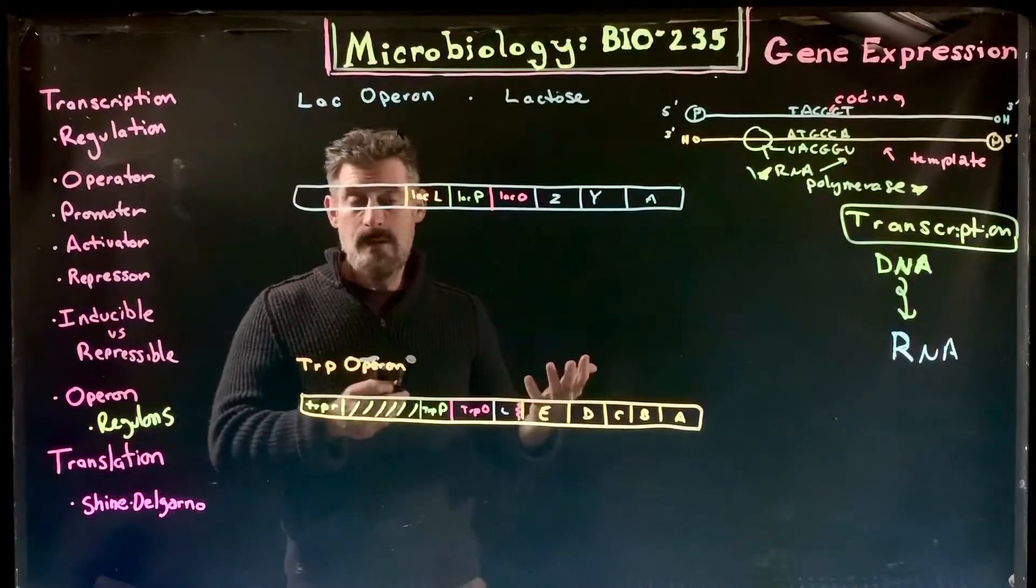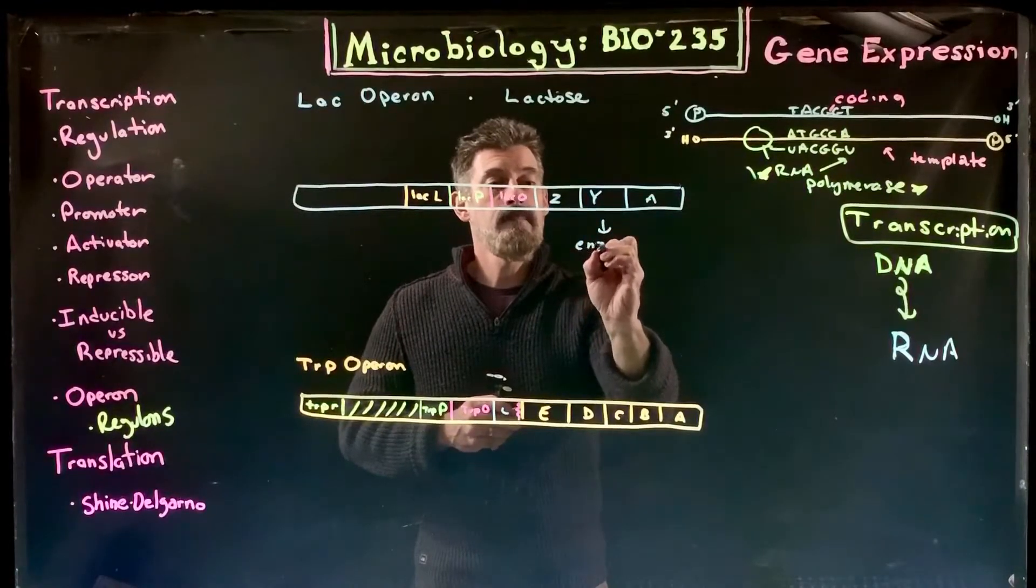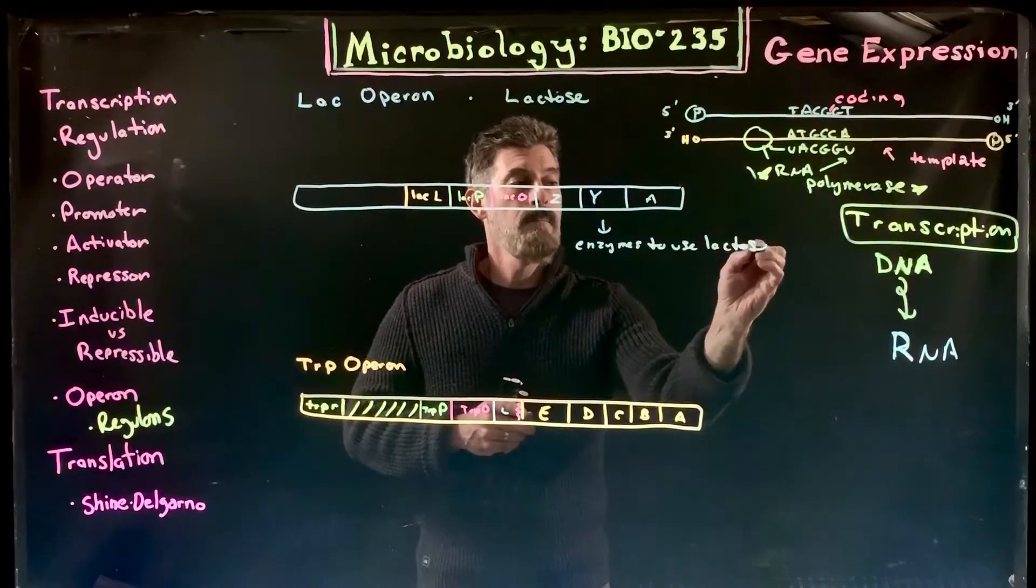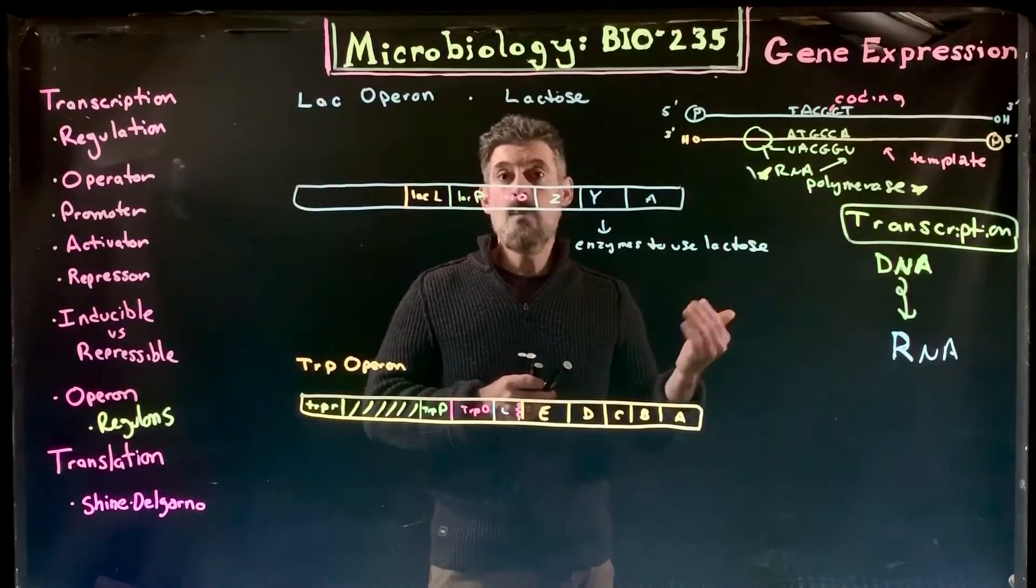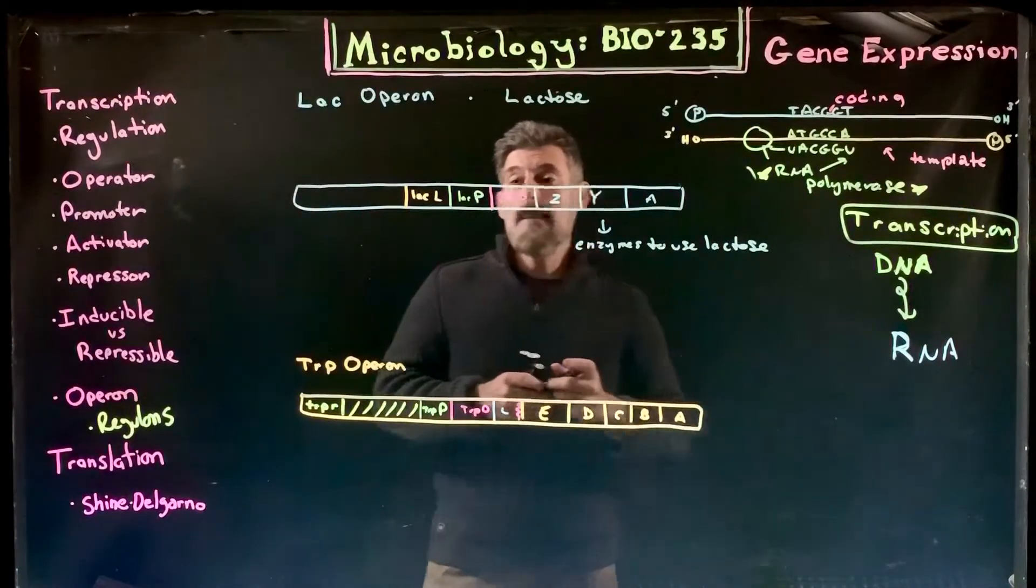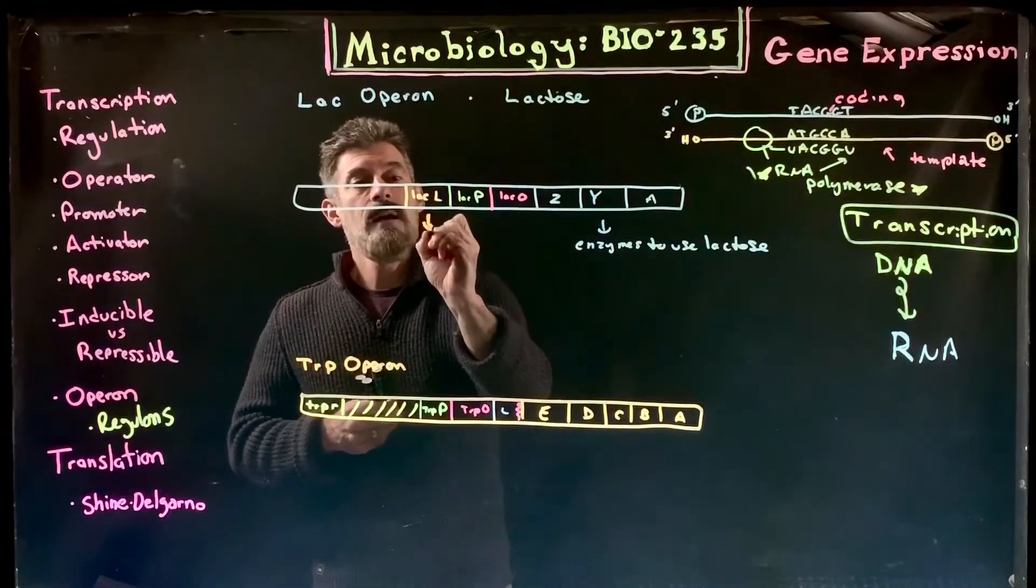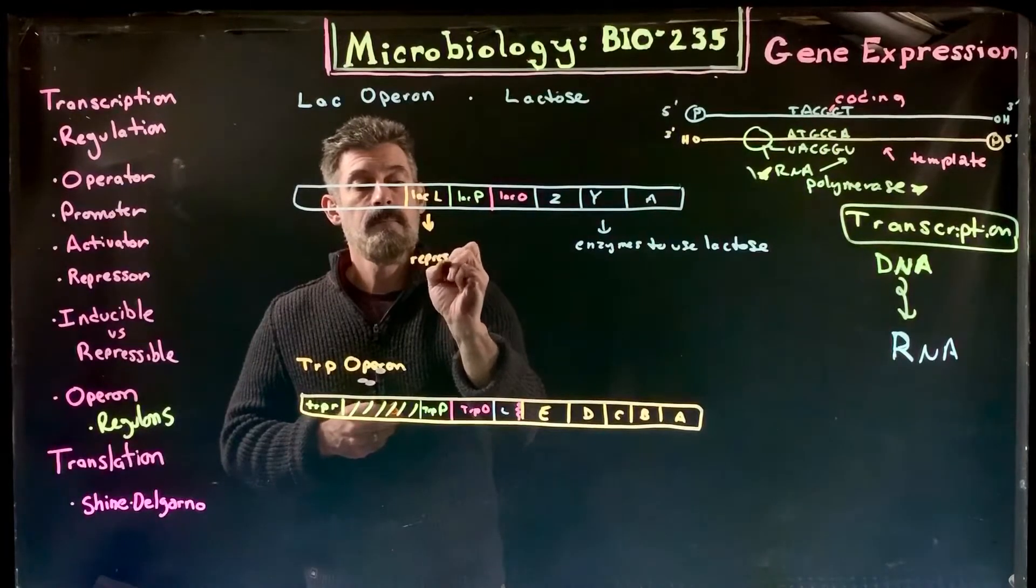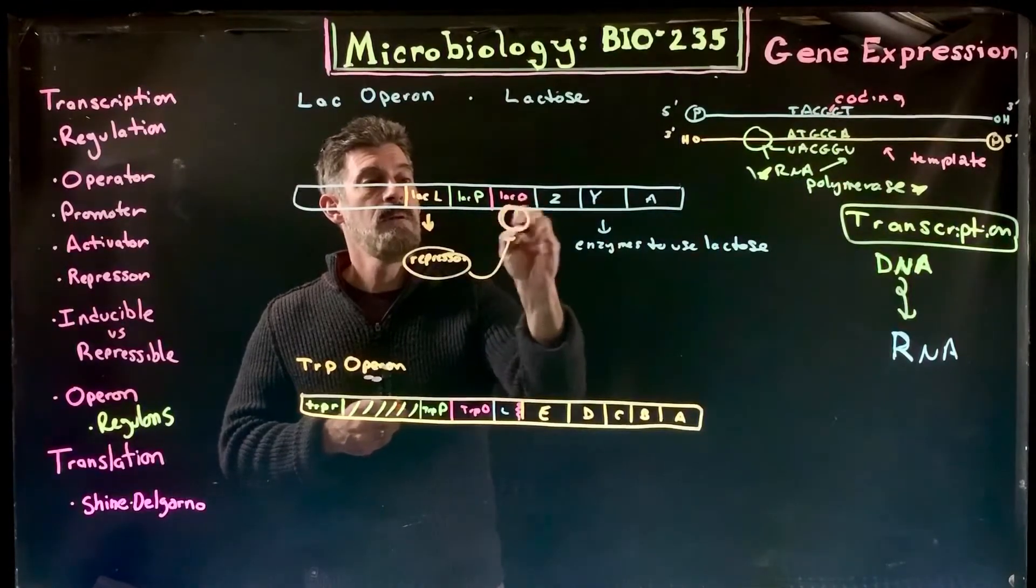They're not always expressing these genes. These are genes for enzymes to use lactose. If there's no lactose present or available, why would a cell be expressing those genes? They typically don't. What happens is we have a gene here that's always producing a repressor protein. That repressor protein binds to the operator.